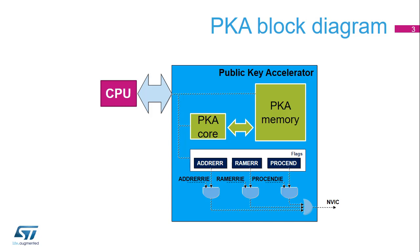The CPU specifies the operation which is to be executed and finally asserts the start bit. Once the PKA reports the end of operation via the PROCENDF flag, the CPU reads the resulting data from the PKA RAM, then clears the PROCENDF flag.